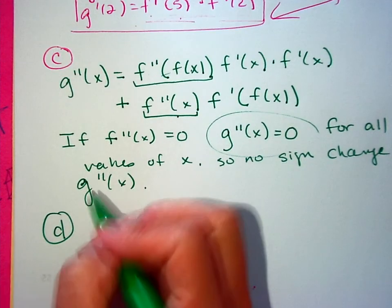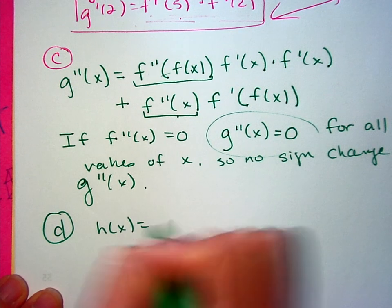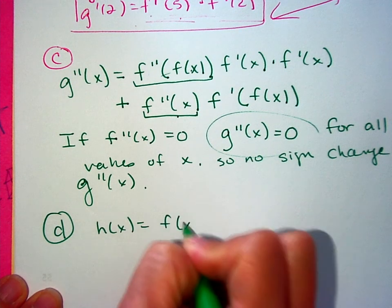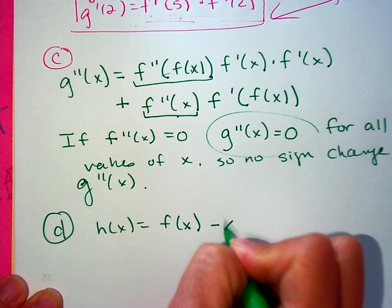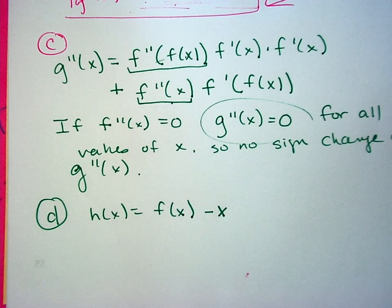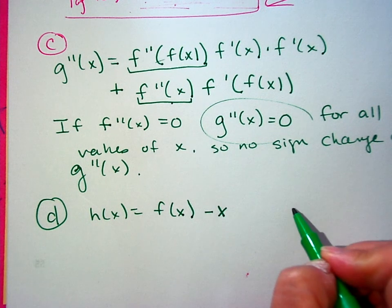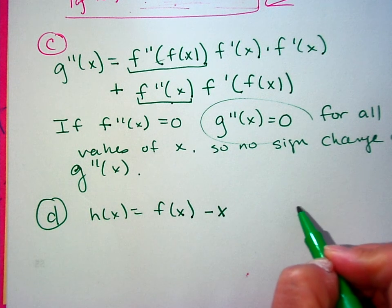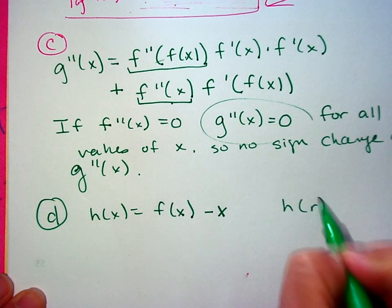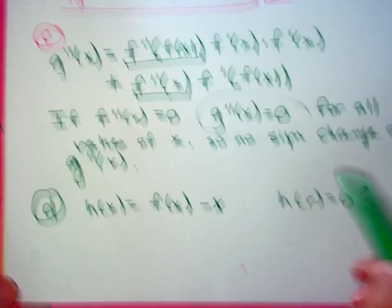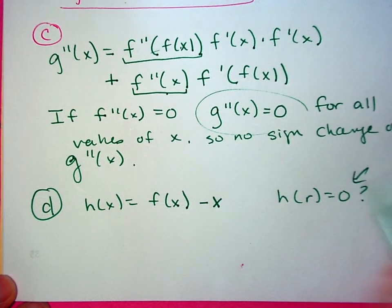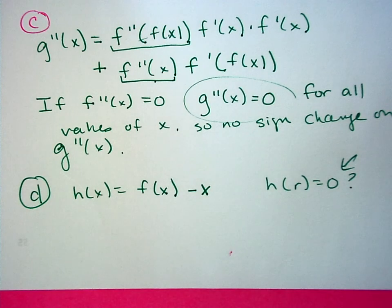Part d: they define h(x) = f(x) − x, and ask you to explain why there must be some value r between 2 and 5 where h(r) = 0 — essentially, a place where the y-value is 0.